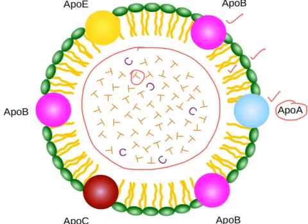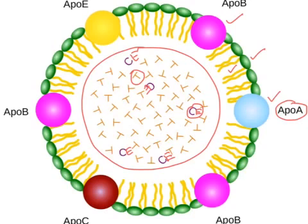Apolipoproteins are arranged over the surface and take care of solubility. The hydrophobic lipids are on the inside — specifically, triacylglycerol and cholesterol ester are in the interior core of the lipoprotein molecule. On the outside, you see phospholipids with polar heads outward and non-polar tails inward, cholesterol with its hydroxyl group outside, and apolipoproteins on the surface. This is the overall arrangement of a typical lipoprotein molecule; of course, the lipid content and apolipoproteins can vary from one lipoprotein to another.